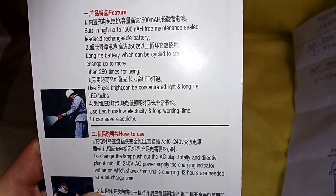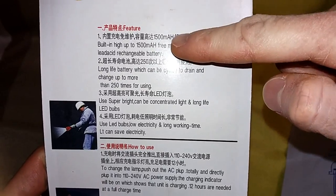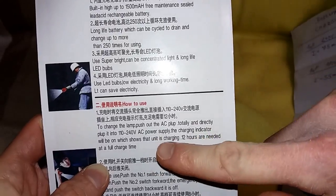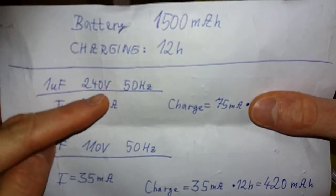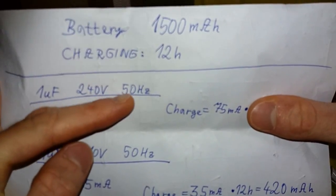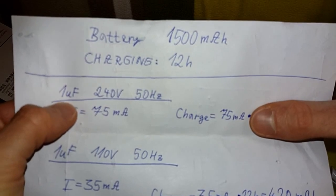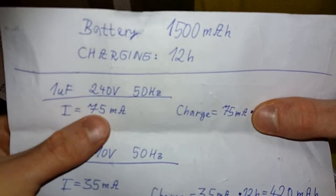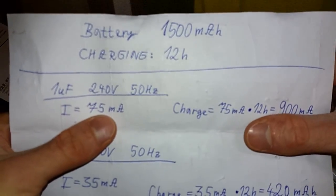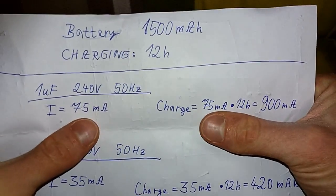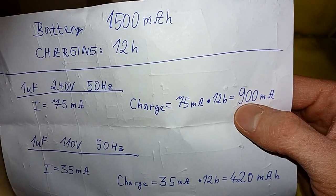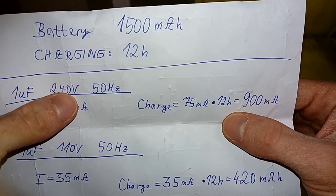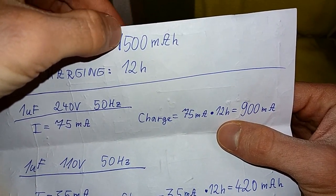And finally, let's do some calculations. So in the manual they say that the capacity of the battery is 1500 milliamp hours and the charging time is 12 hours. So if this is true, then the charging voltage, let's say, is 240 volts 50 hertz, and the charging capacitor in series to limit the current is one microfarad. So I calculated the current is 75 milliamps. So if we keep charging the battery using 75 milliamps times 12 hours, we get the charge of 900 milliamps. So even at the highest possible mains voltage, we cannot actually reach the full charge of the battery - we will charge it just to 900 milliamps, not the full 1500.